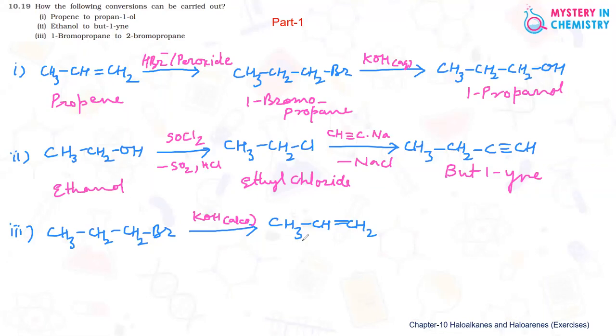By this we can get this propene and when it is treated with HBr according to Markovnikov's rule, then Br is going to that carbon atom where hydrogen is less. So we can get 2-bromo compound, 2-bromopropane.